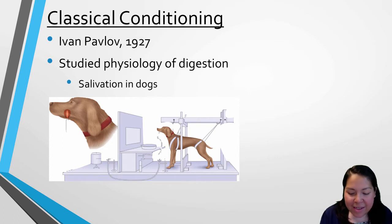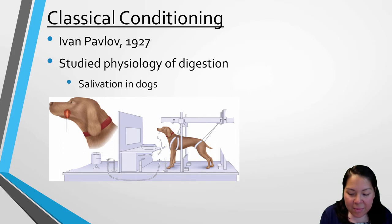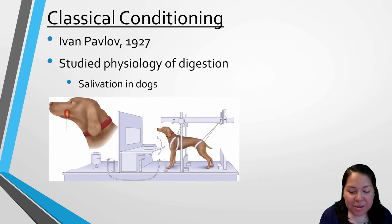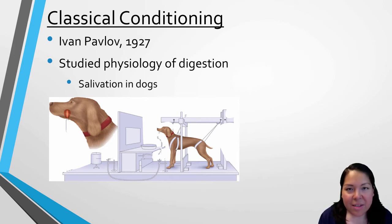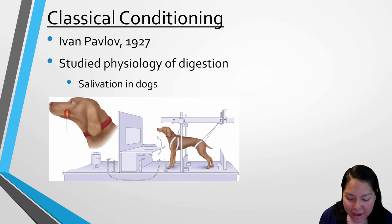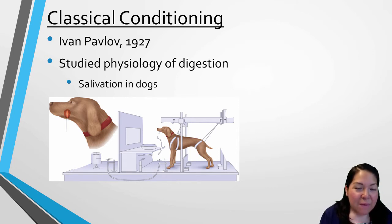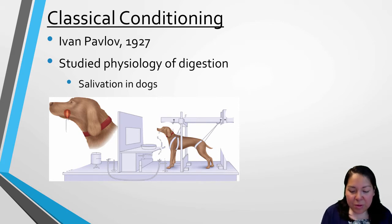The study of the learning process known as classical conditioning began with Pavlov's dogs. Ivan Pavlov initially was studying the digestion of dogs in 1927 when he observed that the dogs would start to salivate at the sight of the researcher coming into the room whether they had food with them or not — much like if you walked towards where you kept your dog's food, your dog may start to wag his tail or jump up and down.